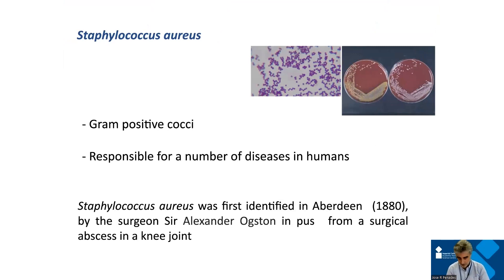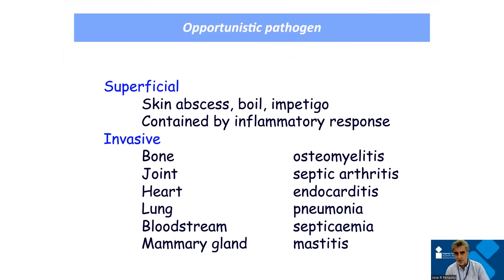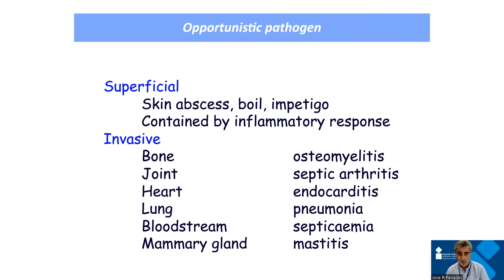It's a gram-positive coccus. In humans and also in many different animals, many people can carry this bacterium with no effect — up to 30–40% of people, for example, can be nasal carriers with no effect. But it's a quite important opportunistic pathogen and it can produce many different and important diseases.